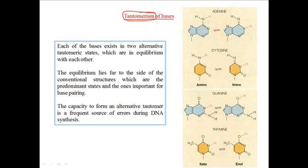Each basis exists in two alternative tautomeric states, as we can see here. In the case of adenine and cytosine - adenine is the purine and cytosine is pyrimidine - in adenine we can see it contains the amino group in this position, in the head position is an amino group.